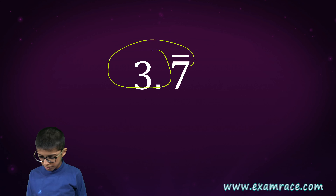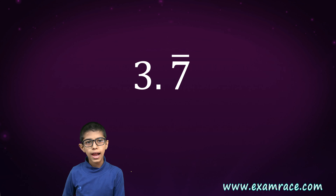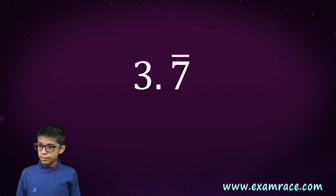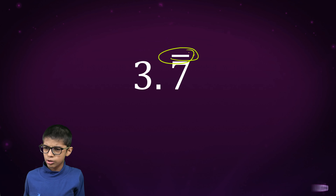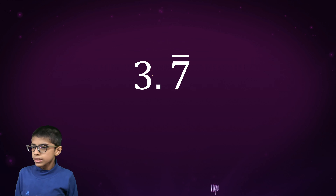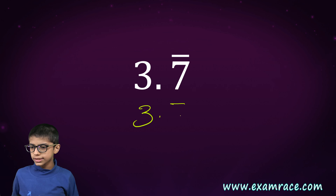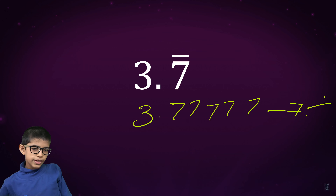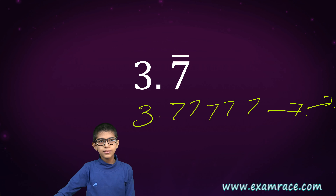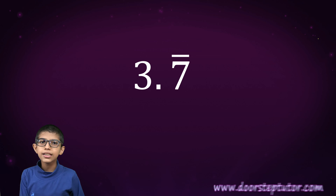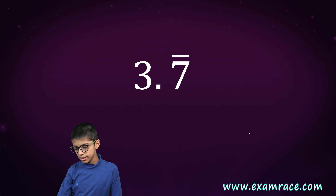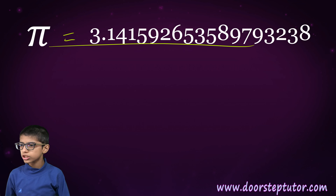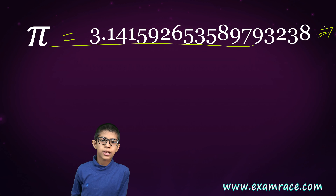For example, I have the number 3.7 bar. This would go on and on. What does this bar mean? It means 3.77777... — if you go to infinity you would get the exact number. But you can't go on forever. Here, this is not the exact value of pi, as pi goes on and on and we cannot write it.